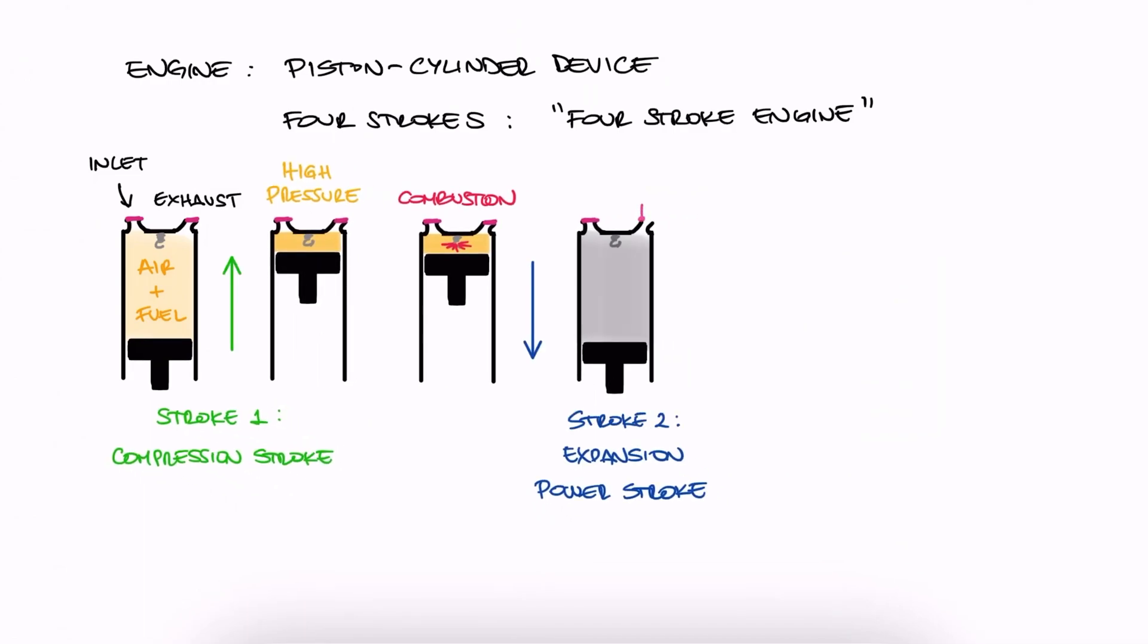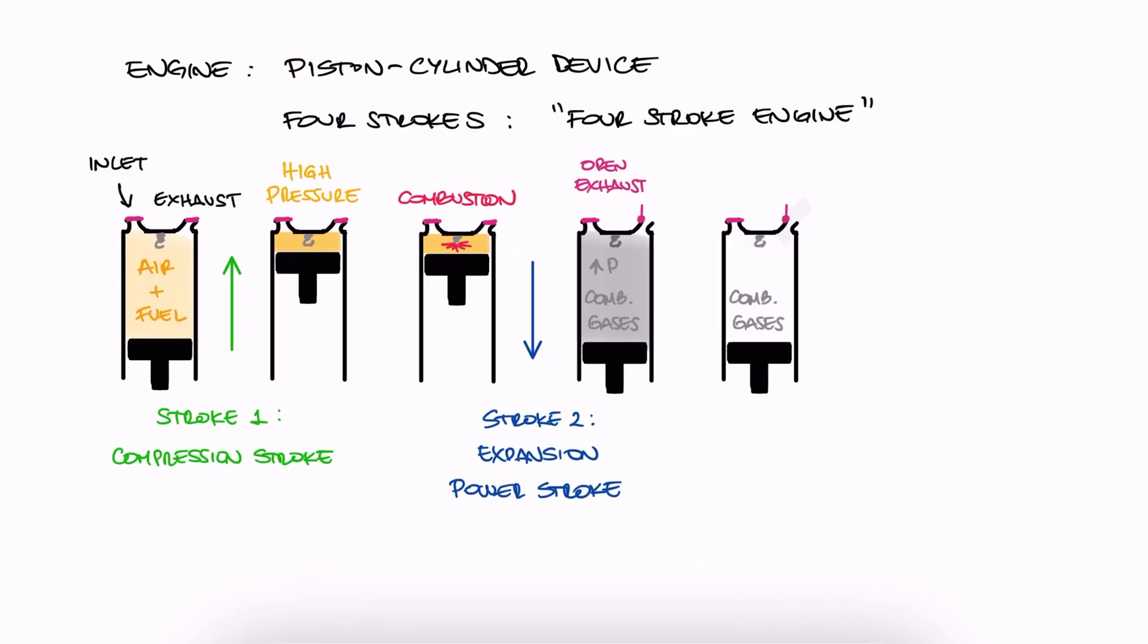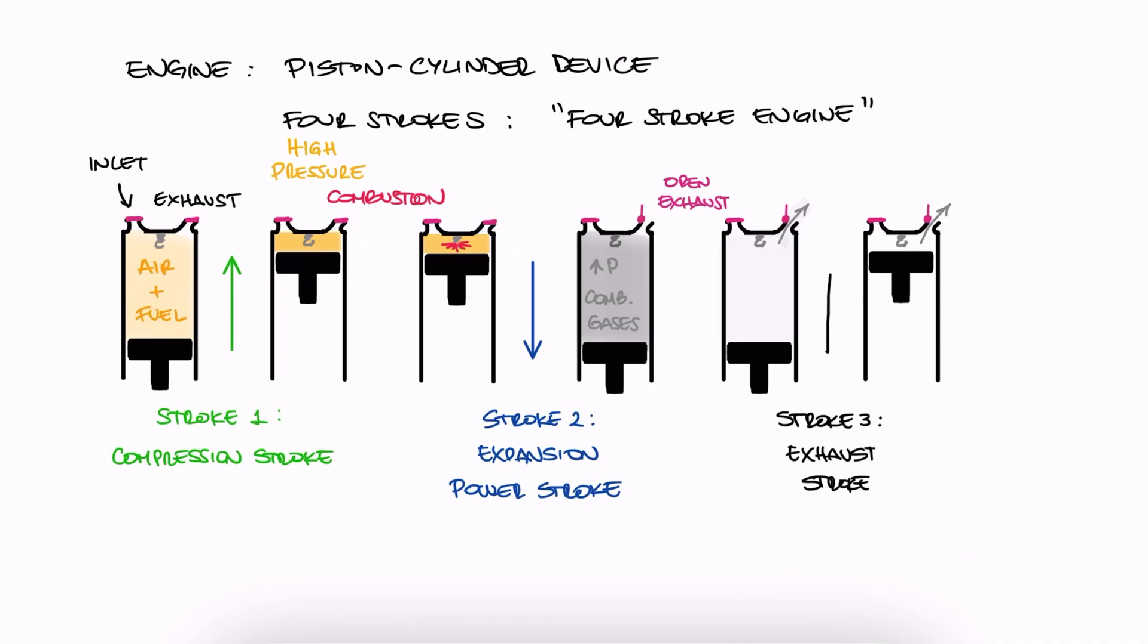Right before the piston reaches its initial position, the exhaust valve opens. Since what's inside the cylinder are hot and therefore higher than atmospheric pressure combustion gases, they quickly flow out of the cylinder without the piston moving much. However, right after that, the piston does push upward to purge all of the exhaust gases in the cylinder. This process is called the exhaust stroke or third stroke.